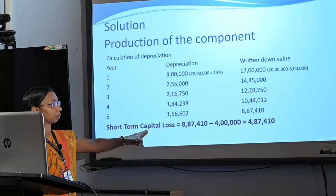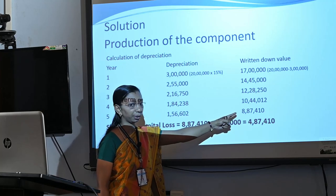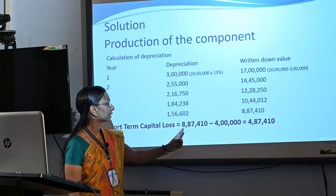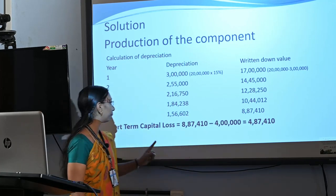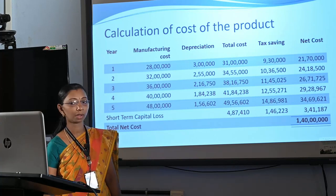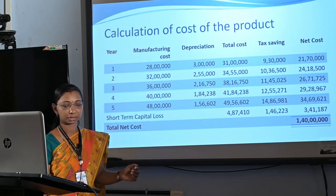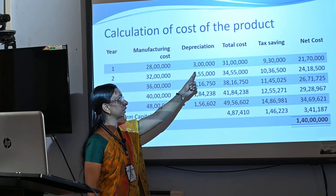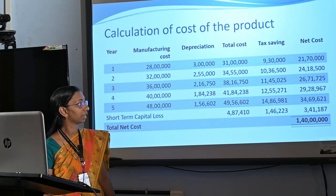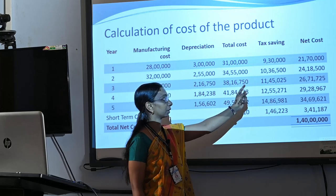Therefore, we have to calculate the short-term capital loss. Short-term capital loss is calculated by comparing the written-down value of the machine at the end of 5 years minus the sale value at the end of the 5th year, that is Rs. 8,87,410 minus Rs. 4,00,000. Therefore, the short-term capital loss is Rs. 4,87,410. Cost of the product means manufacturing cost plus depreciation minus tax savings. In year 1, manufacturing cost is Rs. 28,00,000, depreciation Rs. 3,00,000, total Rs. 31,00,000, tax savings 30% of Rs. 31,00,000 is Rs. 9,30,000, and net cost is Rs. 21,70,000.